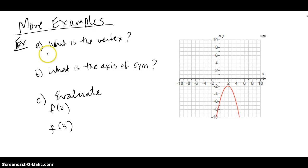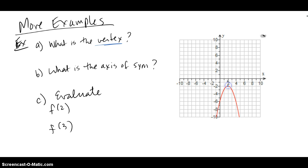Let's look at some more examples. This graph is given to us and we're supposed to find the vertex of the graph. The vertex in this case is right here, which happens to be a maximum point for this graph because it opens downwards. So I see the x coordinate is 2 and the y coordinate is negative 2.